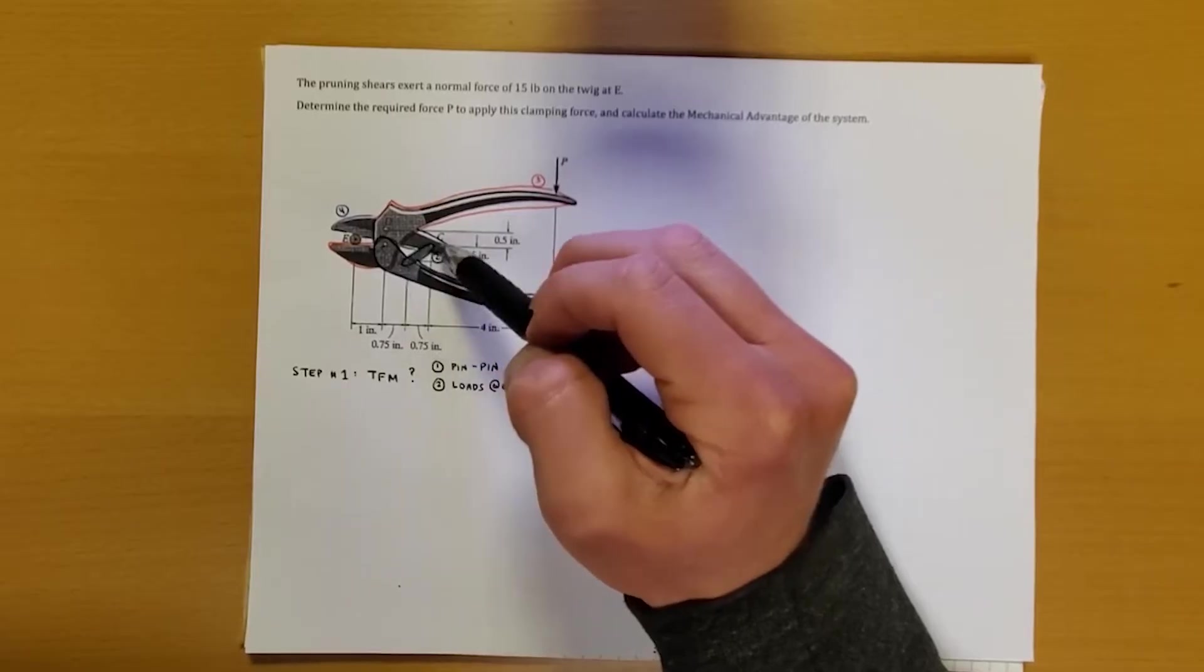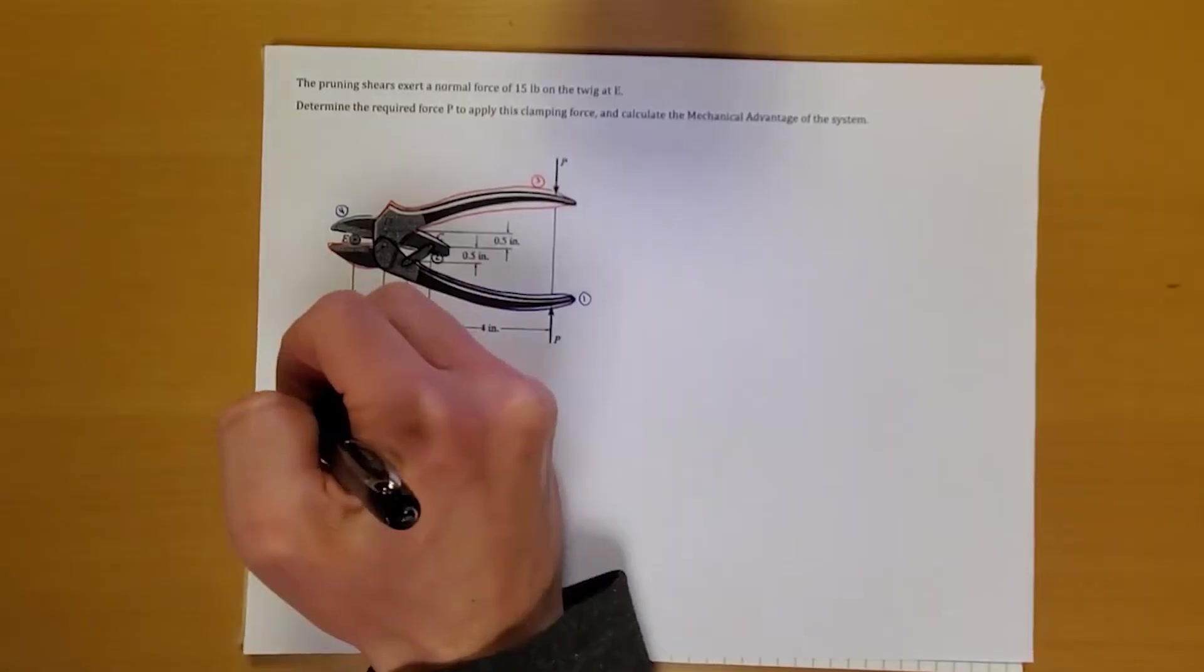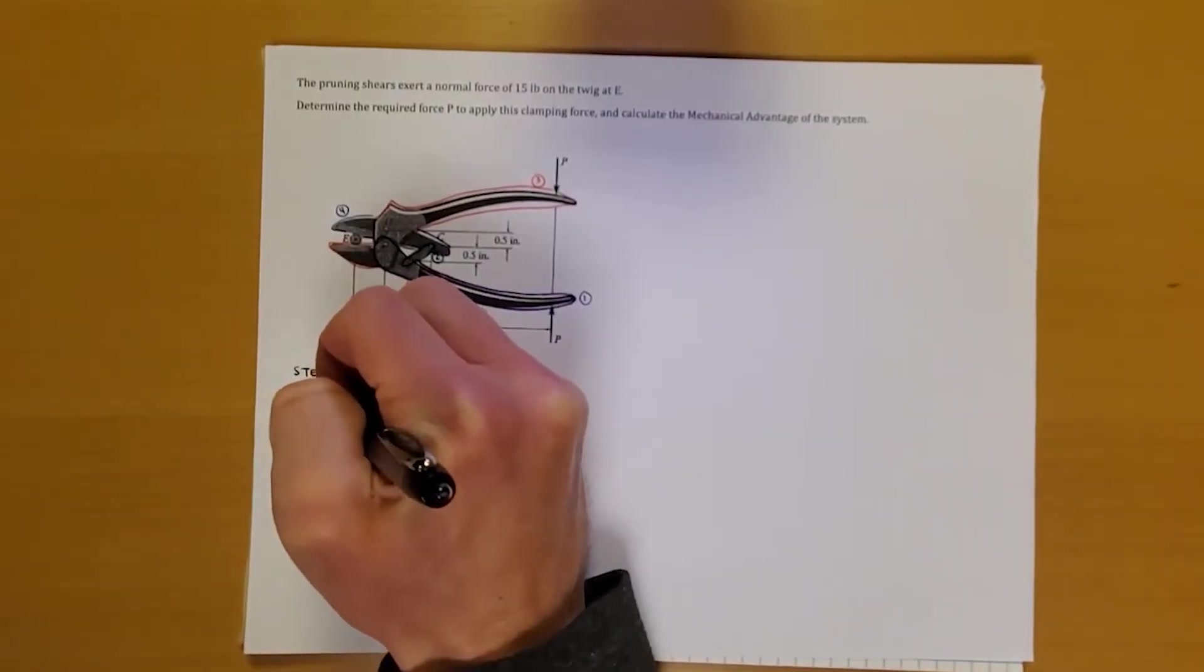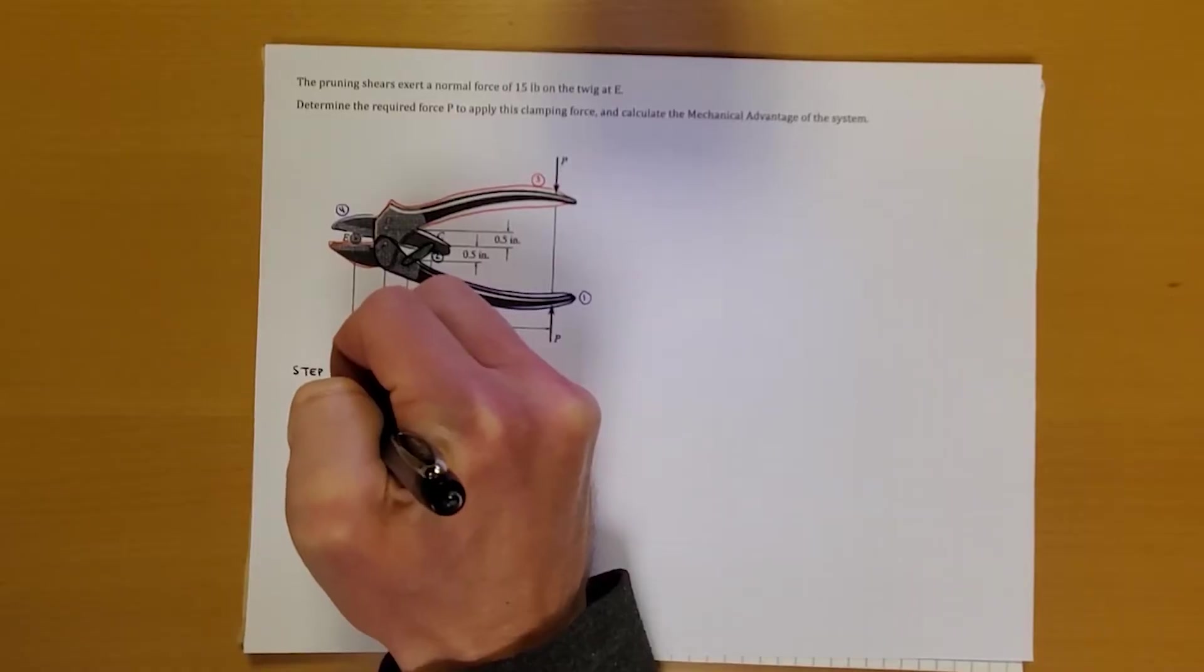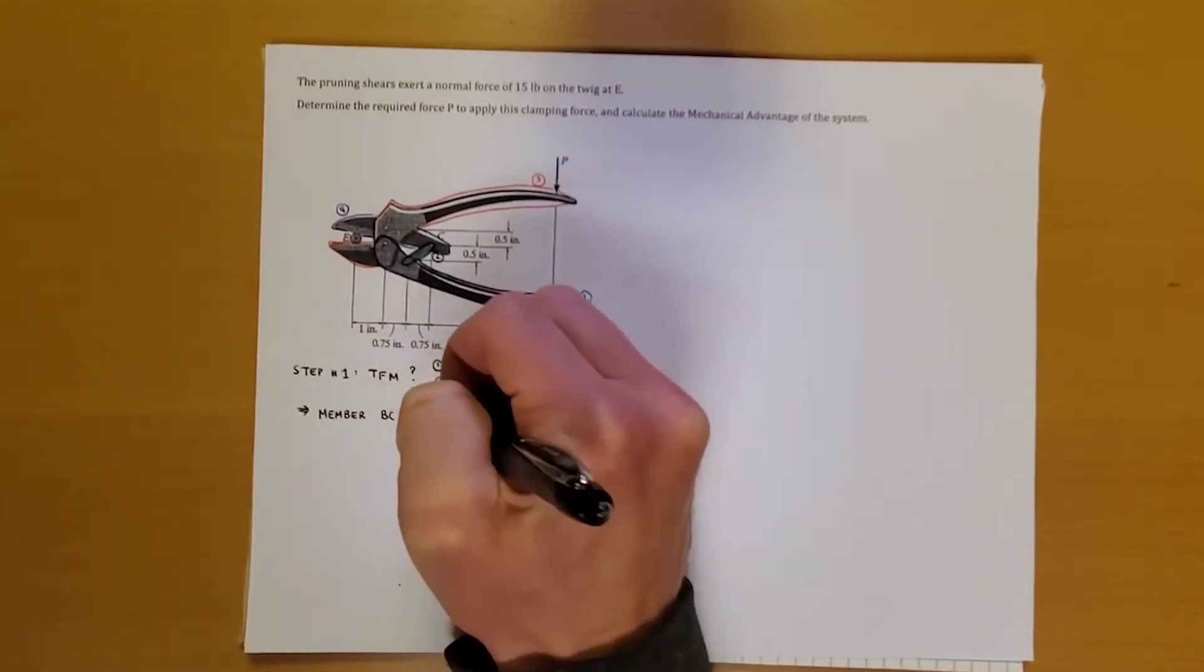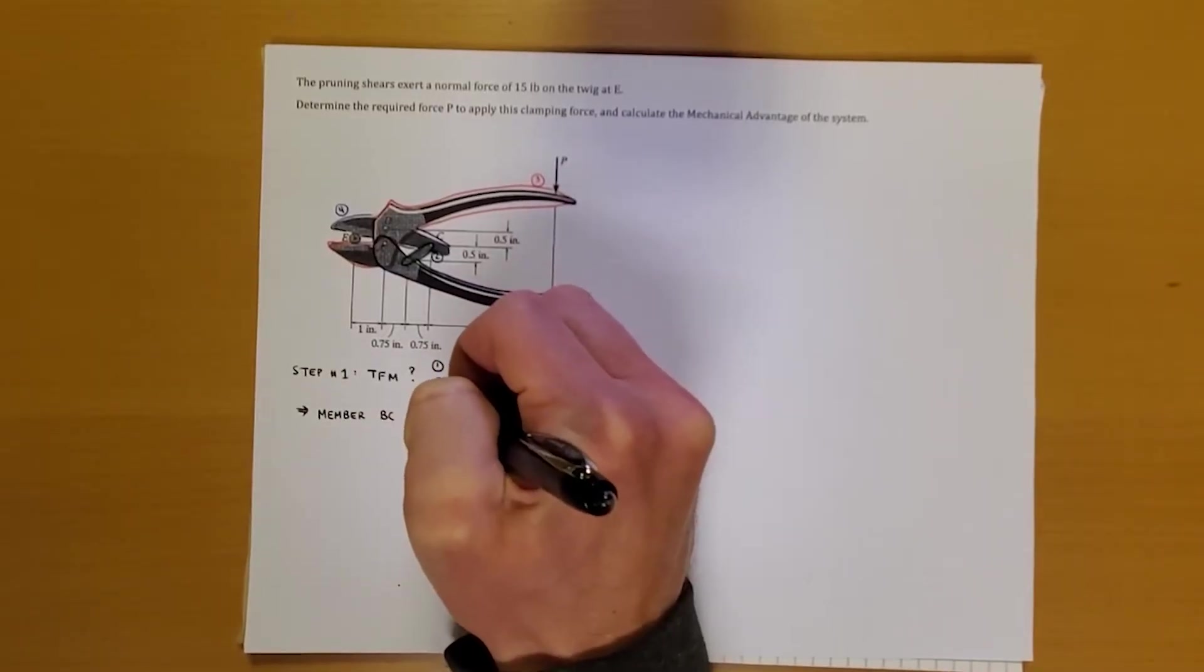but it doesn't have any external loads. So member BC is a two-force member. Now keep going along and see if there are any others, but let's write this down first. Member BC is a two-force member.